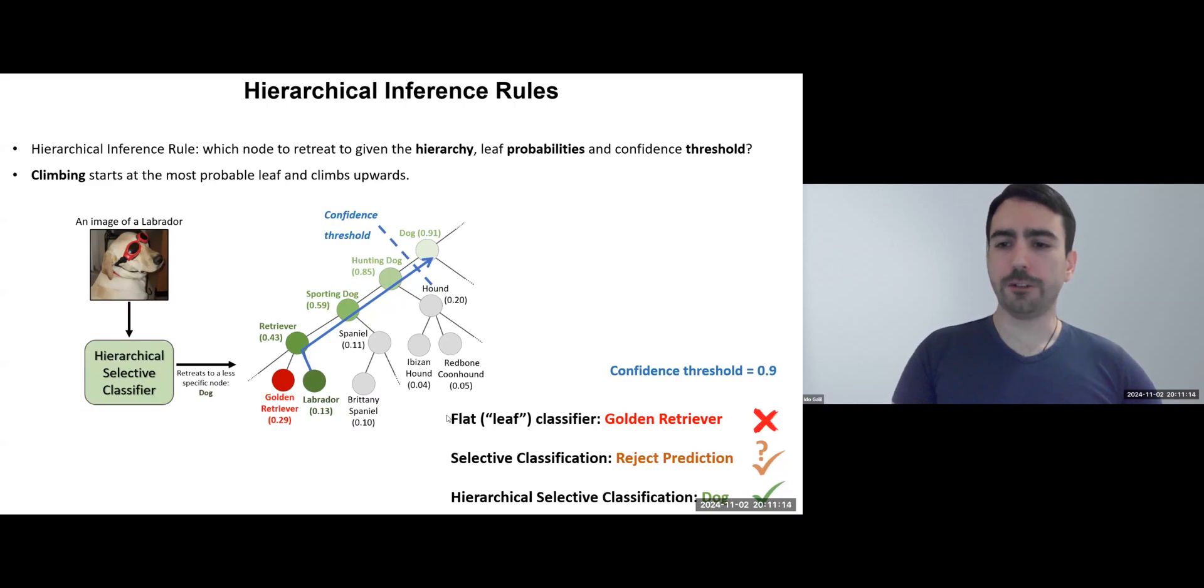We define an inference rule as the method for selecting the node to retreat to based on the hierarchy, probabilities, and threshold. The simple climbing rule we just described has many useful properties, which we discuss in detail in the paper.